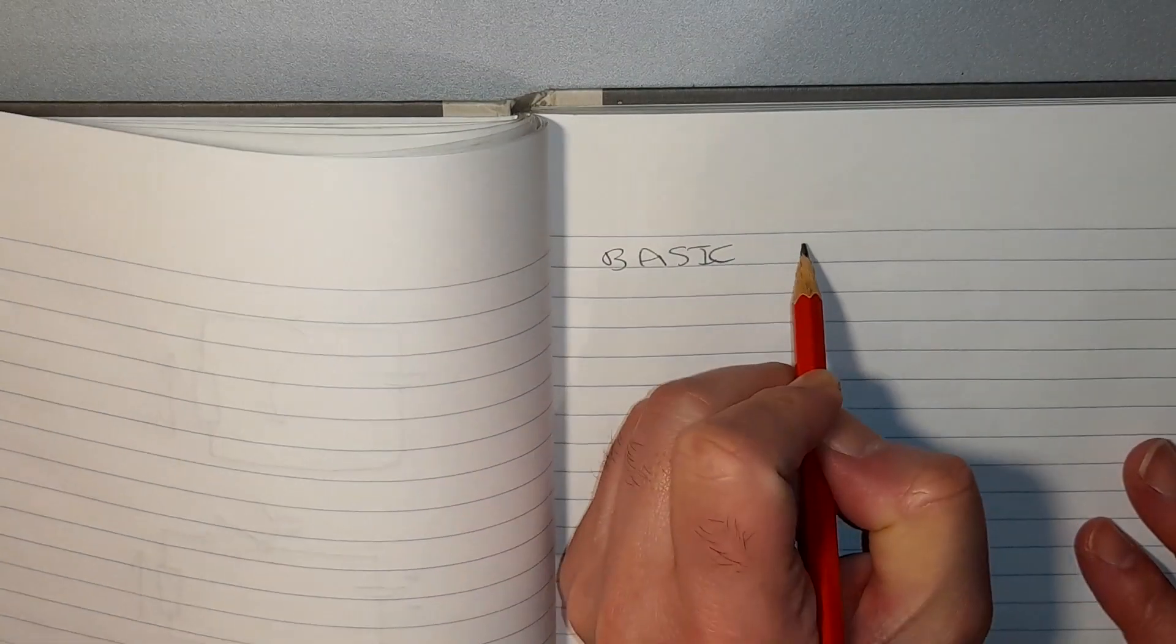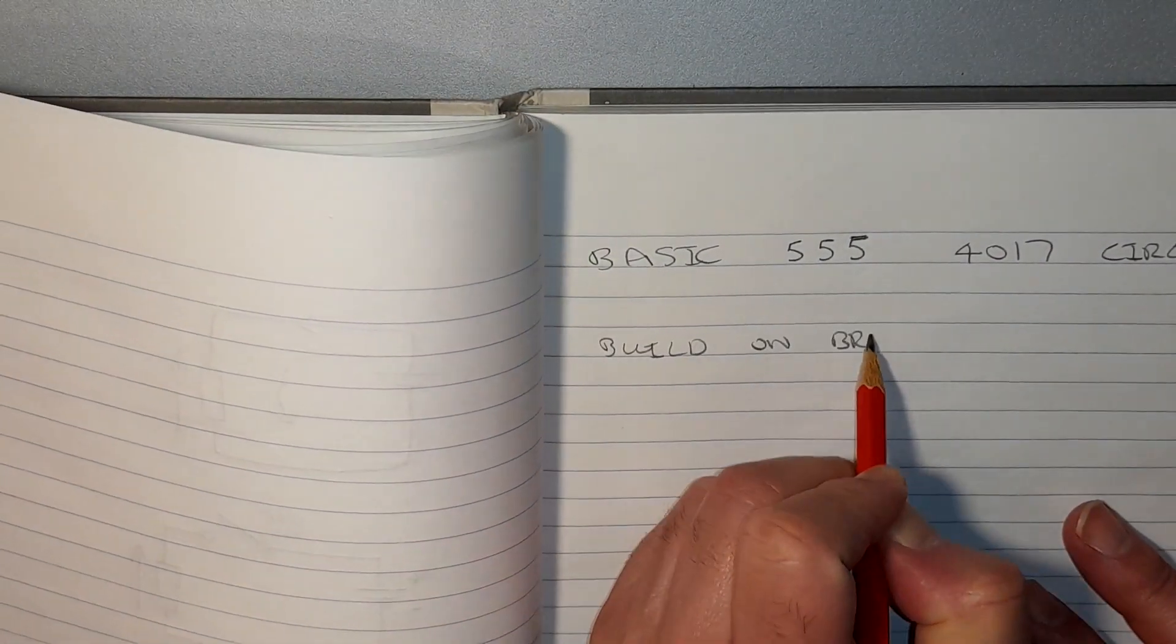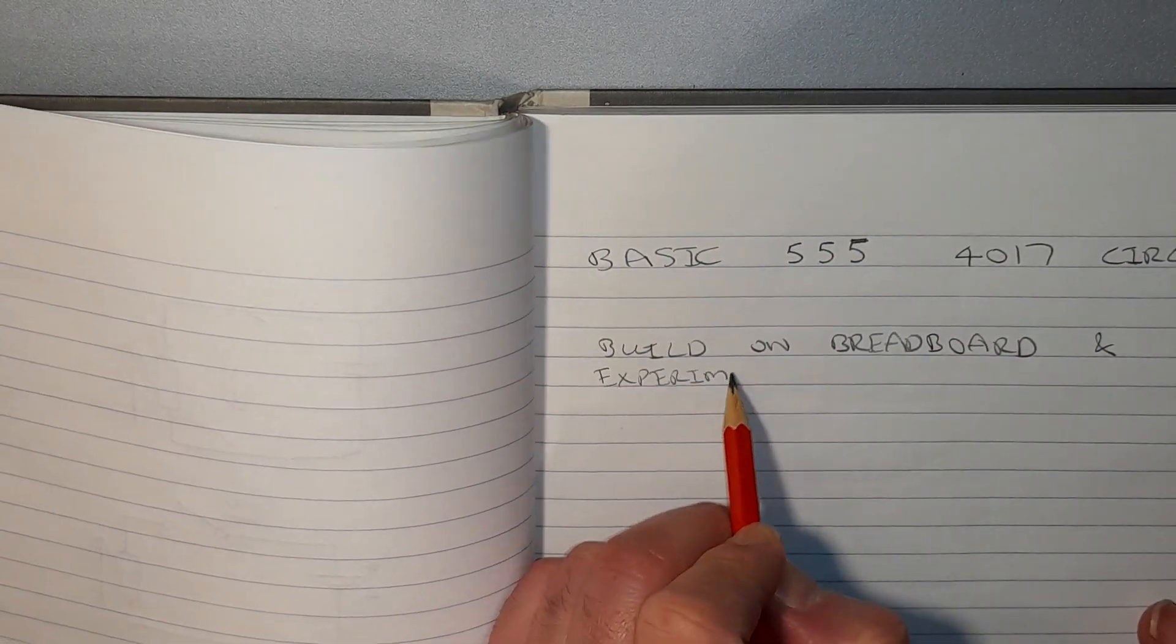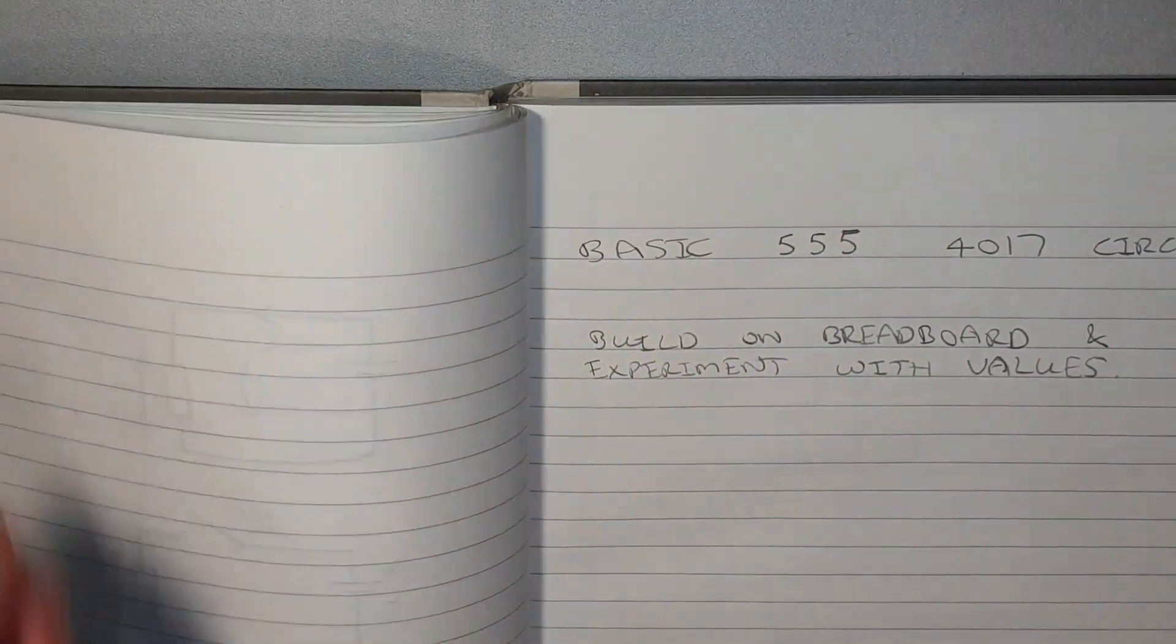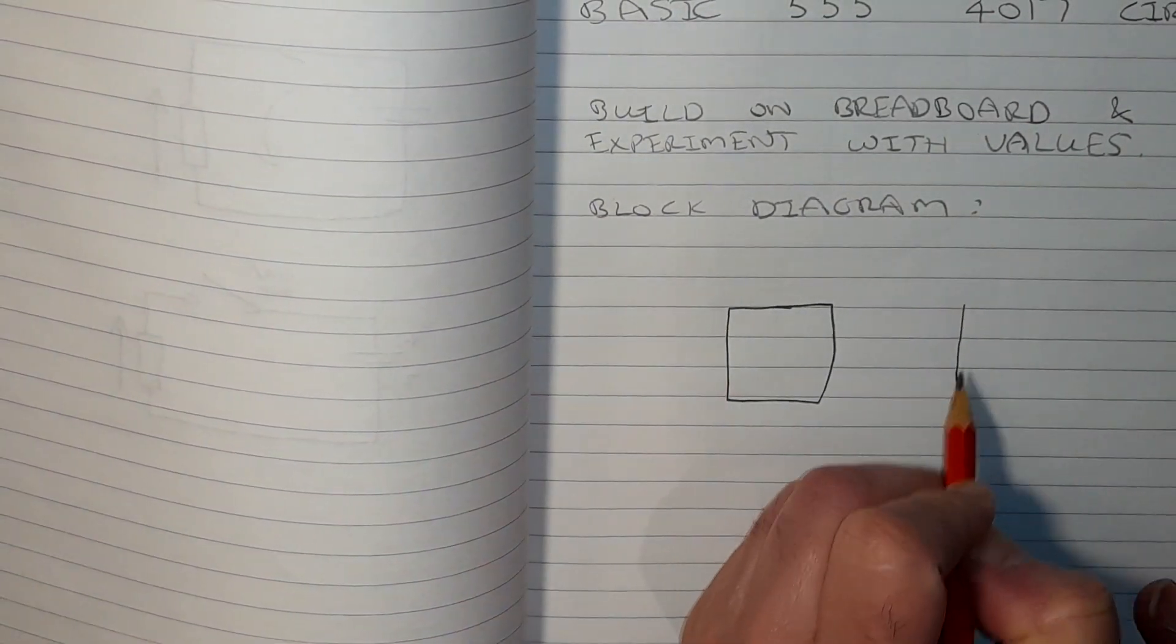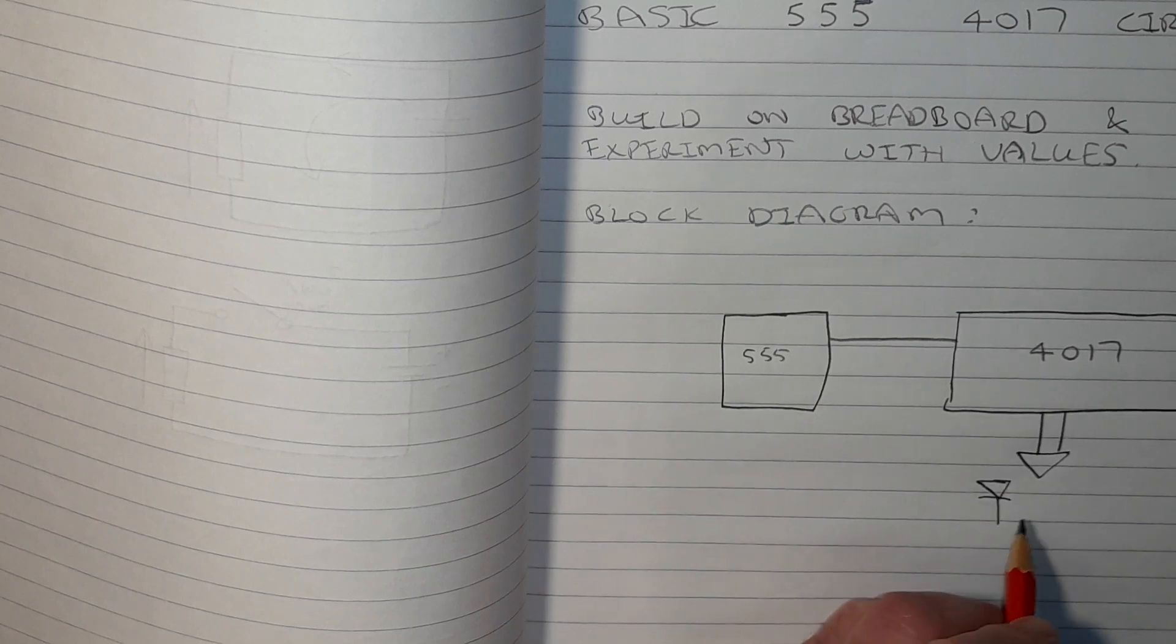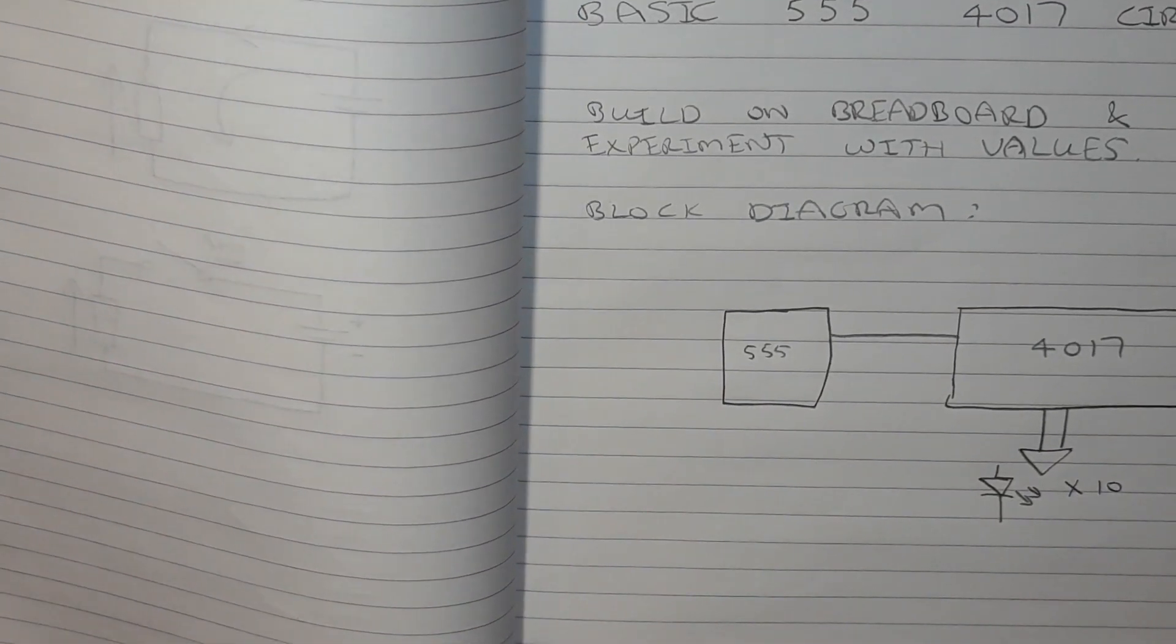In this video I will attempt to build my first 555-4017 circuit. The build will be done on a small Vero board and I will experiment until I have appropriate values for the components. The basic block diagram is simply a 555 timer astable which clocks a 4017 Johnson counter which then drives 10 LEDs.